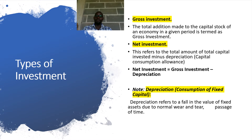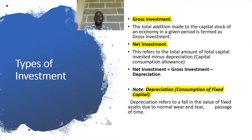Depreciation is also referred to as the capital consumption allowance. To get net investment, we take the value of gross investment and subtract the value of depreciation. The figure that remains is what we refer to as net investment. Depreciation, or consumption of fixed capital, refers to the fall in value of a fixed asset due to normal wear and tear over time.